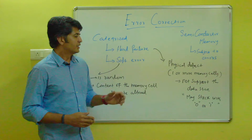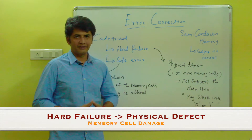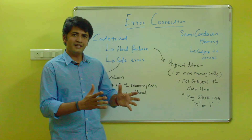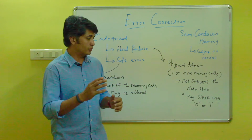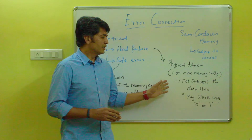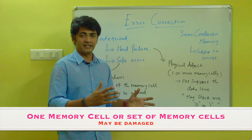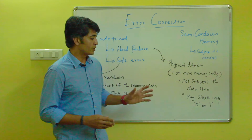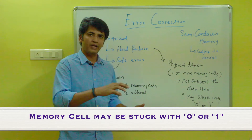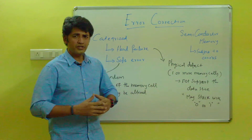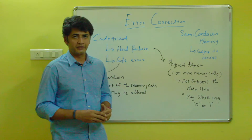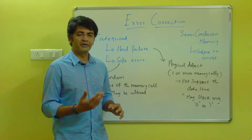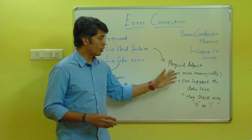Hard failure is related to physical defect. For example, if you are storing data, the data will be stored in a memory cell. If that particular memory cell is physically damaged, you can't store any data into it. One memory cell or a set of memory cells may be affected by physical damage, and the particular cell may be stuck with value 1 or 0. The user can't store or retrieve any value from that memory cell. This is called physical defect or hard failure.